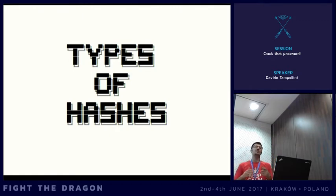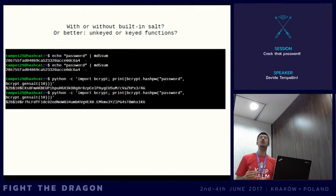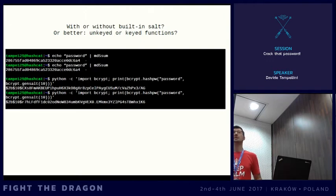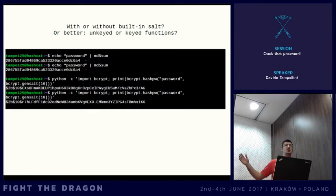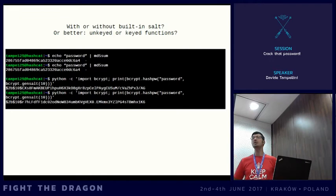There are different types of hashes and the main difference is whether they have a built-in hash or not — or better phrased, whether the function they use is keyed or unkeyed. In practical terms, if I have my password string and feed it to the MD5 function, every time I invoke it the output will be the same. But if we use another function, for example bcrypt, every time I use that algorithm the output is different.